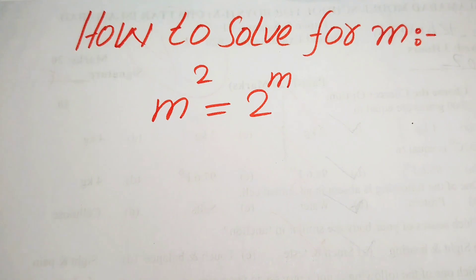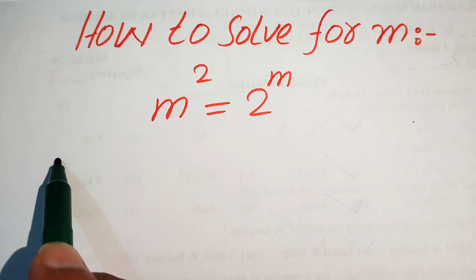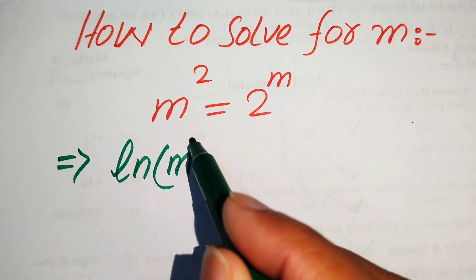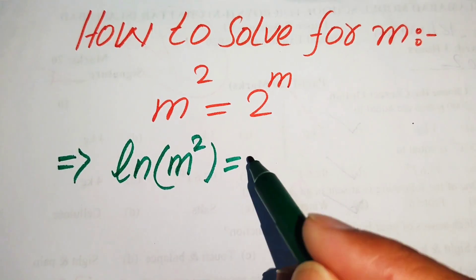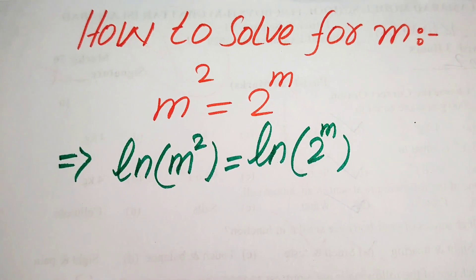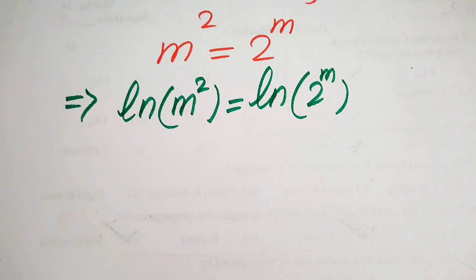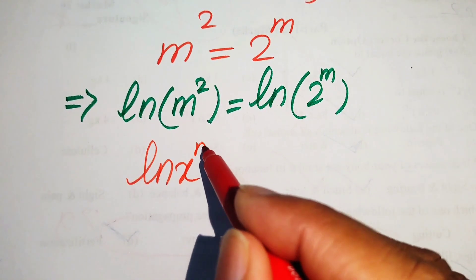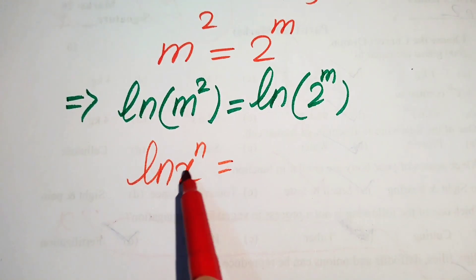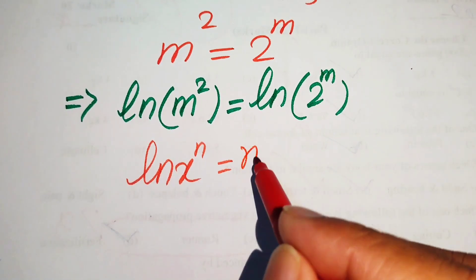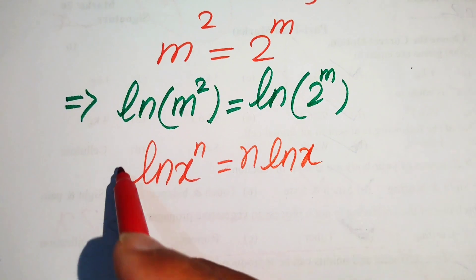The very first step is to take the natural log on both sides, written as log of m squared equals log of 2 to the power of m. We then use the property of logarithms: if we have log of x to the power of n, we move the exponent to the front, written as n times log x.